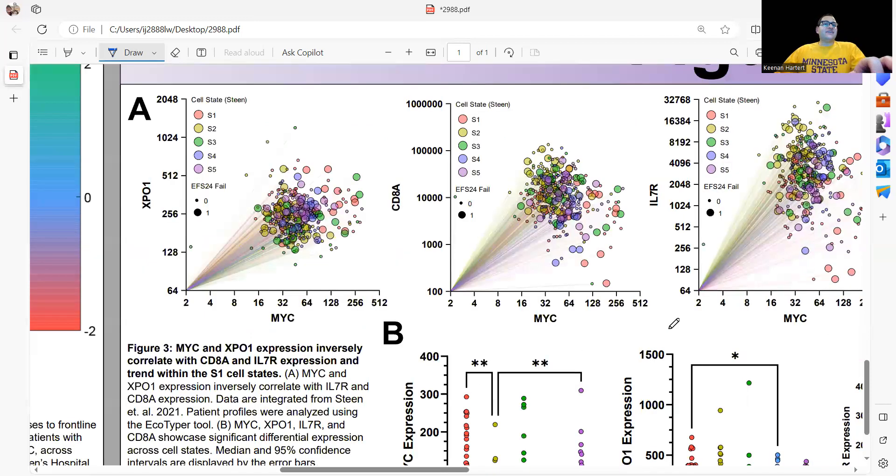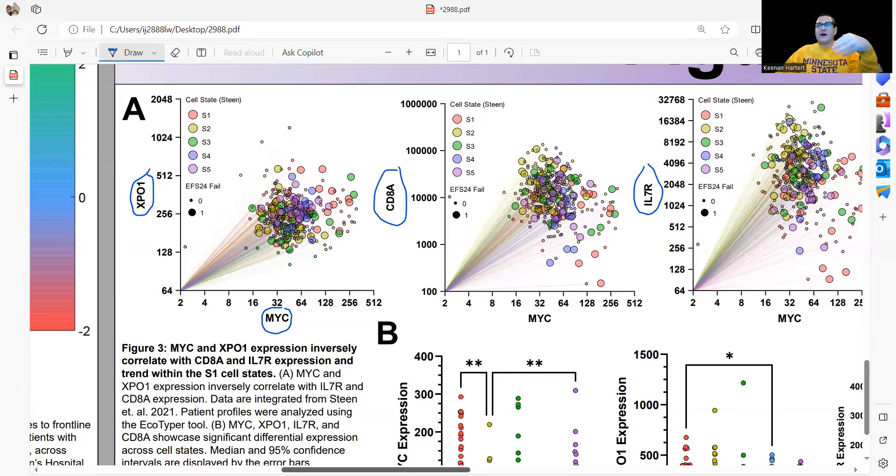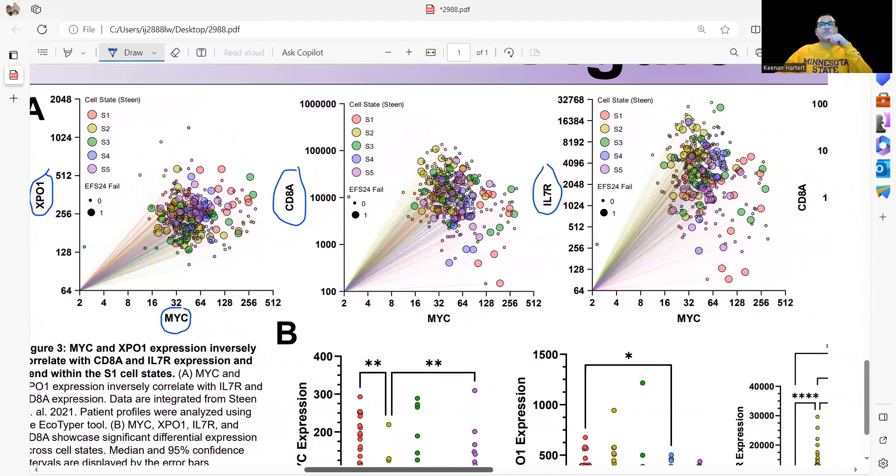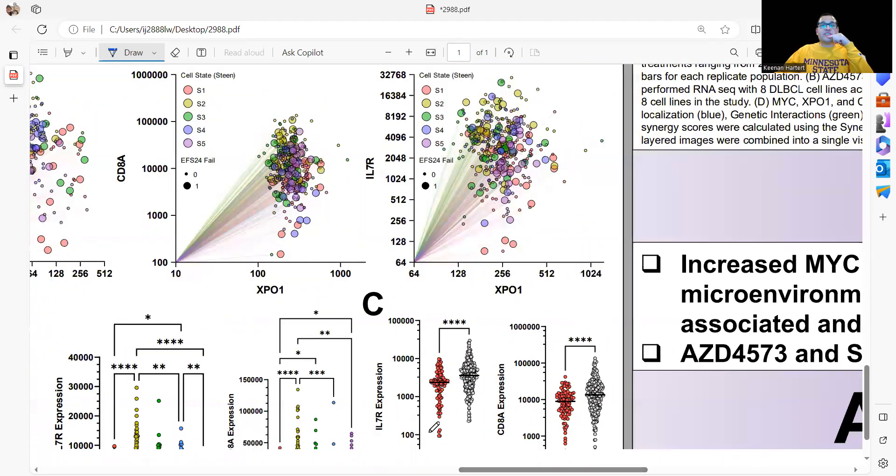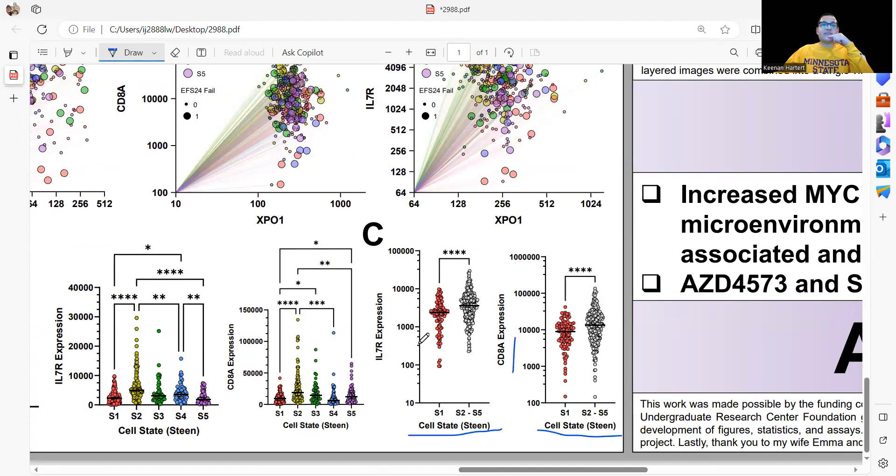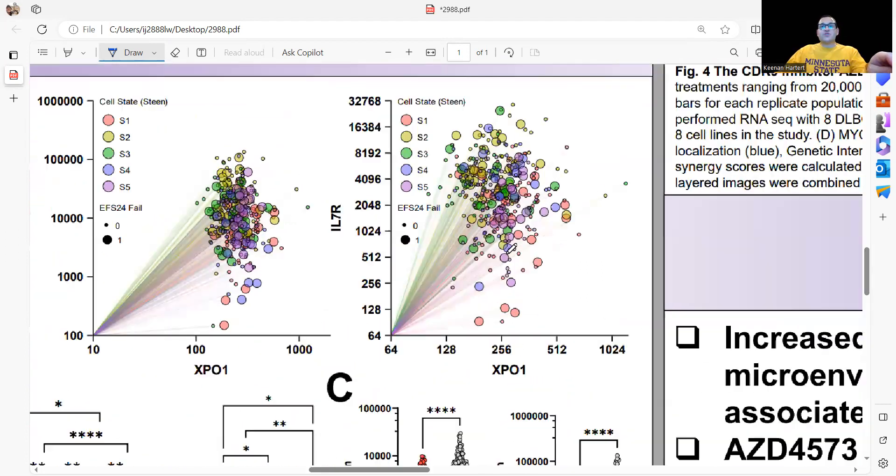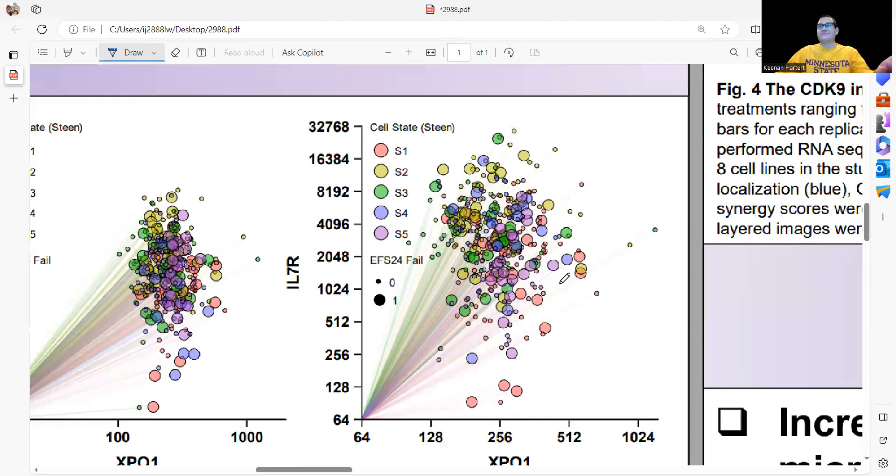The Steen ecotype paper provided us with a tool, ecotyper, that we could use with gene expression data to find patients that fit cell states or ecotypes. We wanted to make comparisons between MYC, XPO1, CD8A, and IL7R. You can see a lot of the S1s are dominating the conversation. We're seeing higher MYC, higher XPO1 in those S1s and lower immune components. Very cool to see. These were super fun to make.